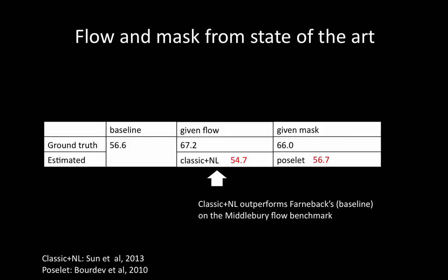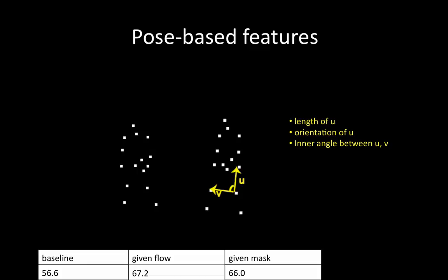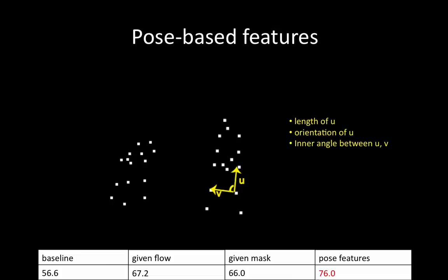Next, we study the performance of high-level features. Given joint positions, we compute a set of relations between joints — for instance, the distance between every pair of joints, their relative orientation, and the inner angle spanned by triples of joints. The resulting pose features outperform all of the low- to mid-level features that we have tried. We conclude that high-level pose features are more reliable than flow-based features.